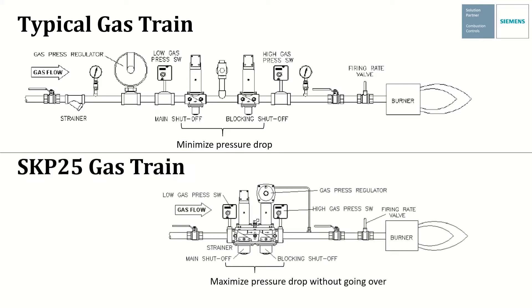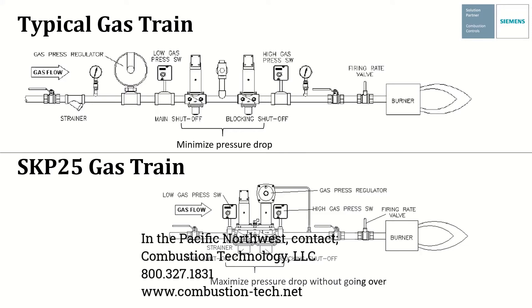The SKP25 gas train is shorter because now the regulator and the blocking shutoff valve are one component. Like sizing an orifice of a regulator, we now decrease the valve body size to maximize the pressure drop across the valve without going over. The smaller the valve body, the better the regulator function will perform.